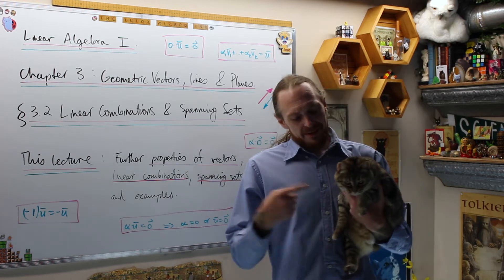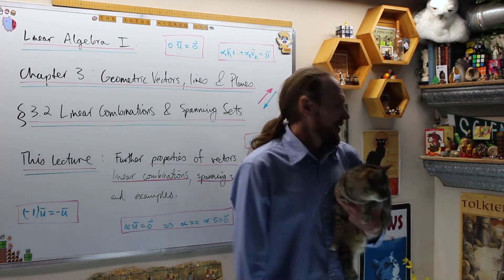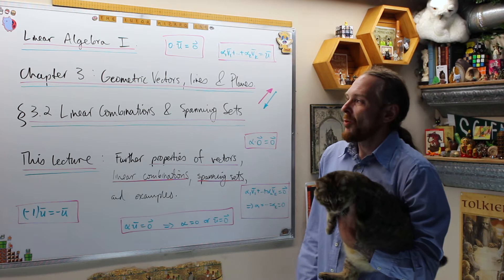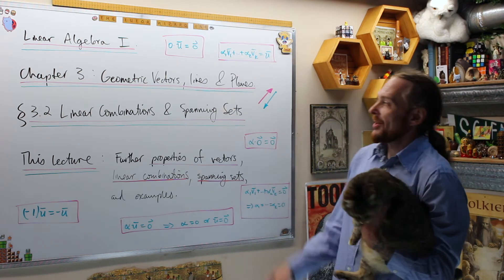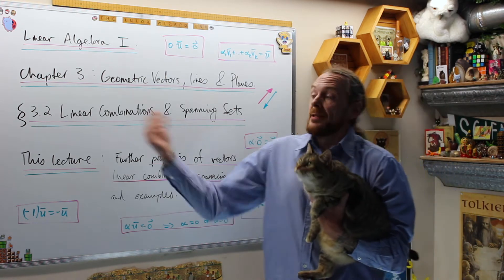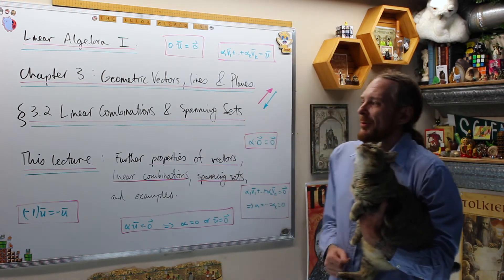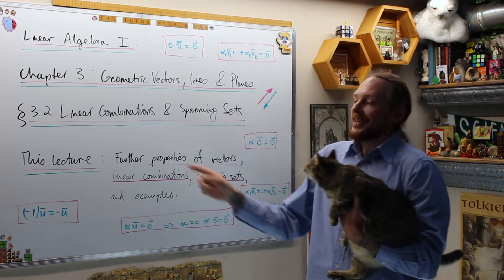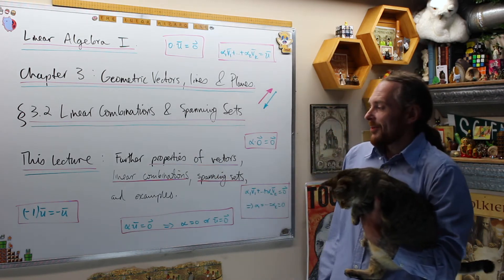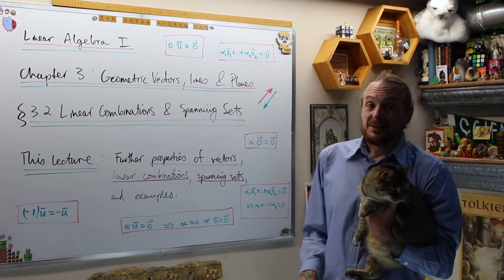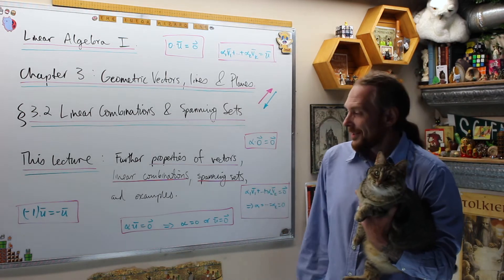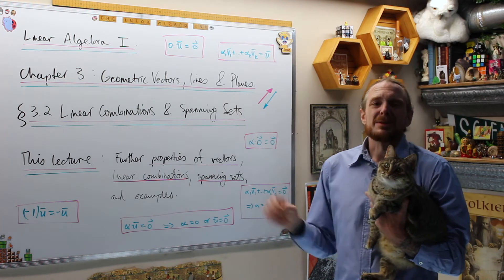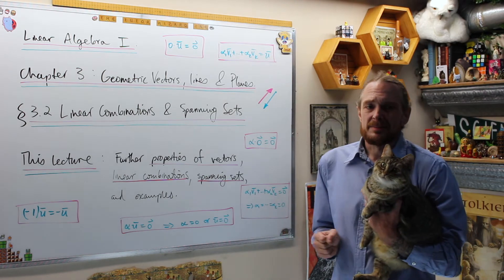Welcome back. This is the Tudor Wizard. I'm Adrian. This is Petra. Please subscribe right there. We're doing Linear Algebra 1. This is Chapter 3, Geometric Vectors, Lines and Planes. This time we're doing Section 3.2: Linear Combinations and Spanning Sets. This lecture specifically, we're going to do further properties of vectors, squeeze them in because I forgot them in the last one, and then we're going to do Linear Combinations and Spanning Sets with some examples. Let's get to it.